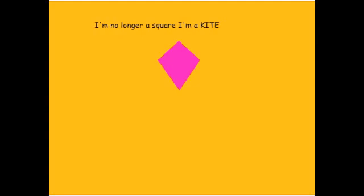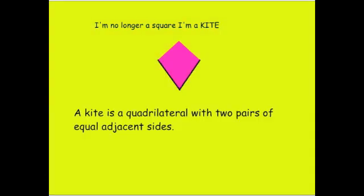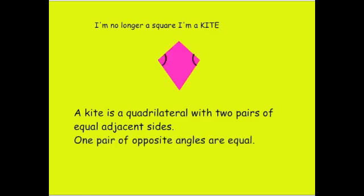I'm a kite. A kite has two pairs of equal adjacent sides. Adjacent means that they are next to each other. One pair of opposite angles is also equal.